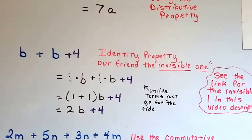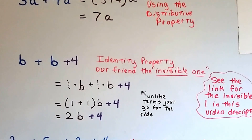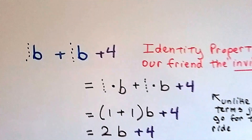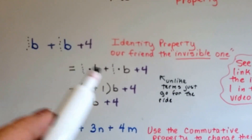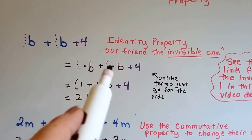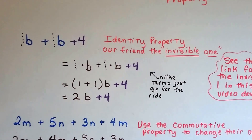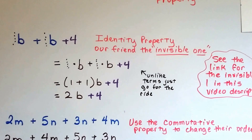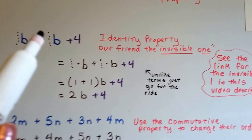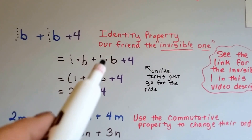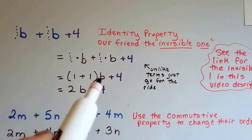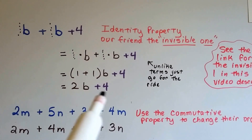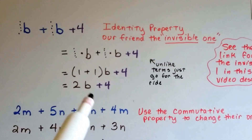Now here's our friend the invisible one that I always talk about. We've got b plus b plus 4. The identity property tells us there's actually an invisible 1 sitting in front of every lone variable, so we have 1 times b plus 1 times b plus the 4. The two b terms are like terms, but the plus 4 isn't, so it just goes along for the ride. If you don't know what I'm talking about with the invisible one, there's a link to that video in the description. So we do 1 plus 1 inside parentheses with b on the outside using distributive property — 1 plus 1 is 2, so we have 2b. The 4 is an unlike term, so we just put plus 4 at the end.